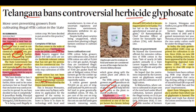In India, only GM crop approved is BT cotton — approved in 2006. After that, the Genetic Engineering Appraisal Committee has not approved any other genetically engineered crop. So the use of HTBT cotton is illegal. Apart from Telangana, Kerala is another state which has completely banned glyphosate.